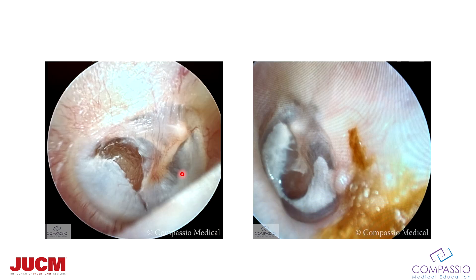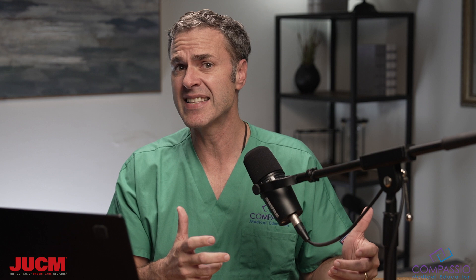This is more extensive myringosclerosis — a right ear. Look at all of this scarring right here. It may even give the illusion that this is a perforation, but it's not. This is a horseshoe of myringosclerosis that may give the illusion there's a hole, but there isn't. You don't have to refer these patients to the ENT provider unless they're complaining of hearing loss.